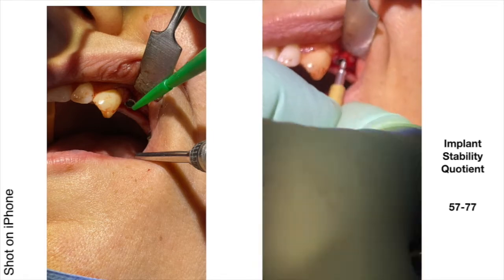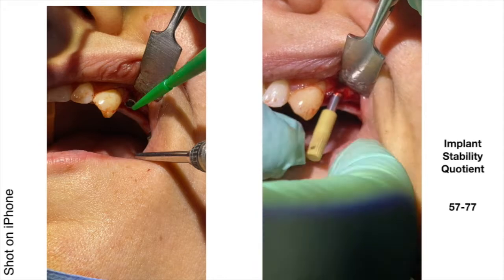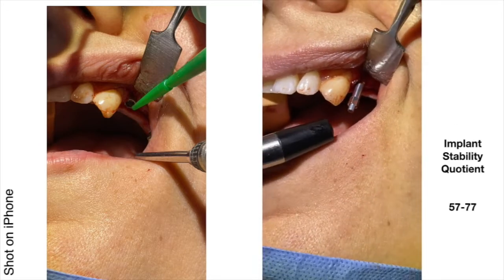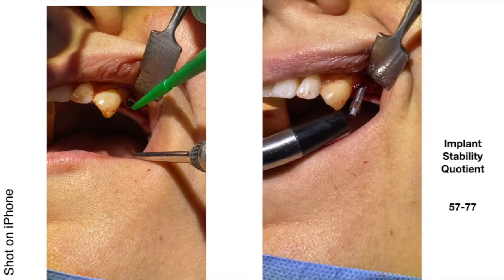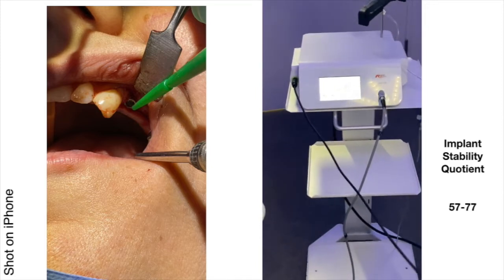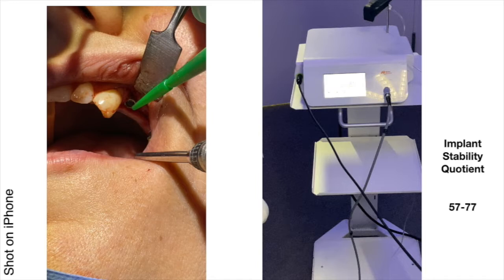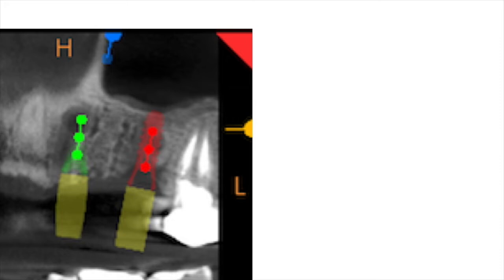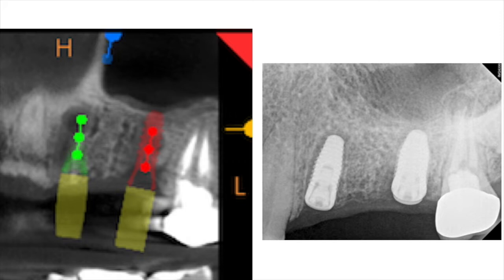To test how firm the implant is in the jawbone, we use an implant stability quotient. We attach a peg into the implant and take a reading — it should be between 57 and 77; higher is better. In this case the implant measures 81, which means it's very firm and should be ready in about eight weeks. This is how the surgery was planned, and this is the post-operative radiograph demonstrating the final position of the two implants. The one implant that looked close to the root is actually fine — angulation can deceive you, which is why planning ahead is so valuable.